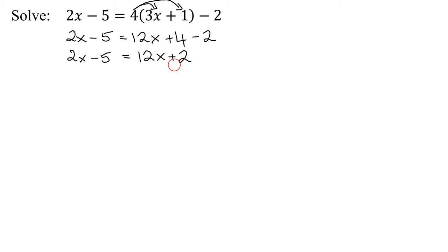So can I simplify the right-hand side anymore? No. So now I'm going to get x's on one side, numbers on the other. Does it matter which way round we do it? No, it's your choice. So in this case, I'm going to collect my x's on the right-hand side for a change. So I'm going to have to remove that 2x there.